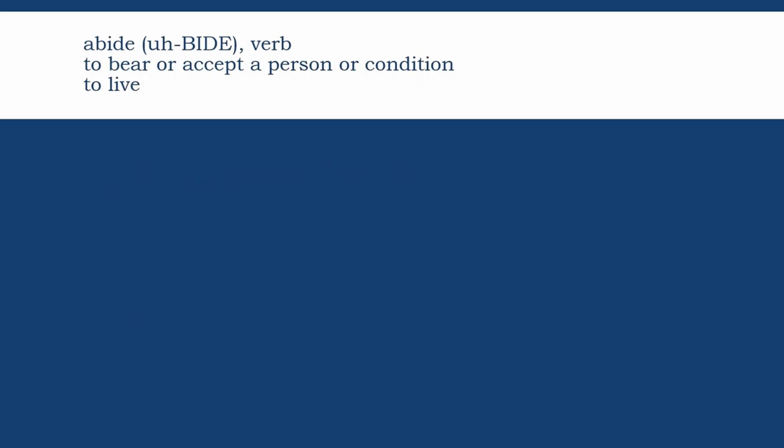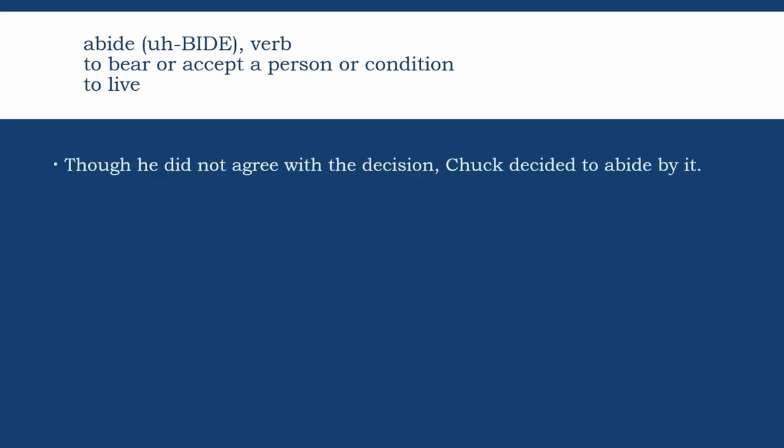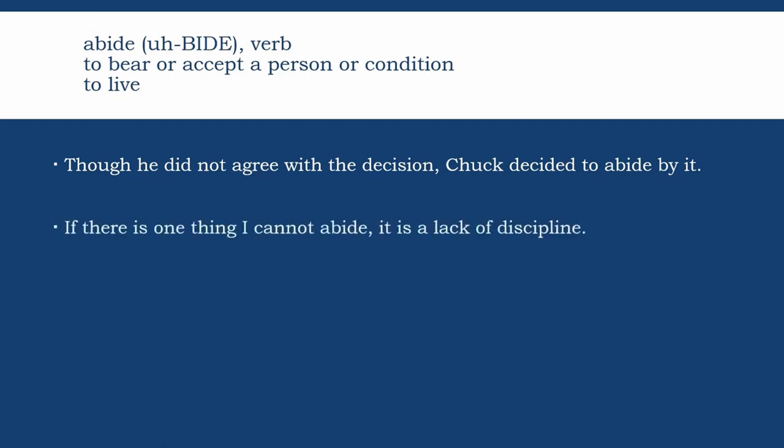Abide. The stress is on the second syllable: abide. Abide means to bear or accept a person or condition. It is to patiently wait or tolerate. Though he did not agree with the decision, Chuck decided to abide by it. If there is one thing I cannot abide, it is a lack of discipline.